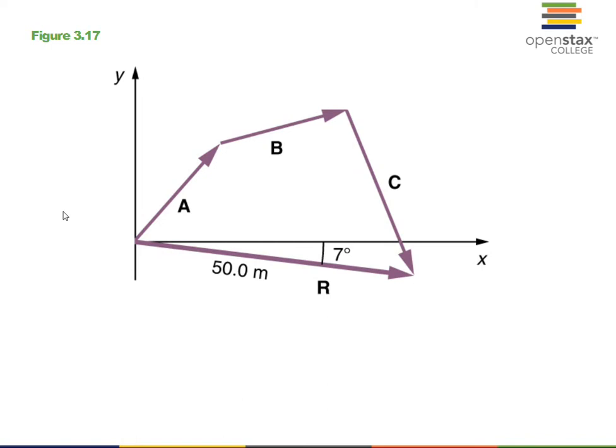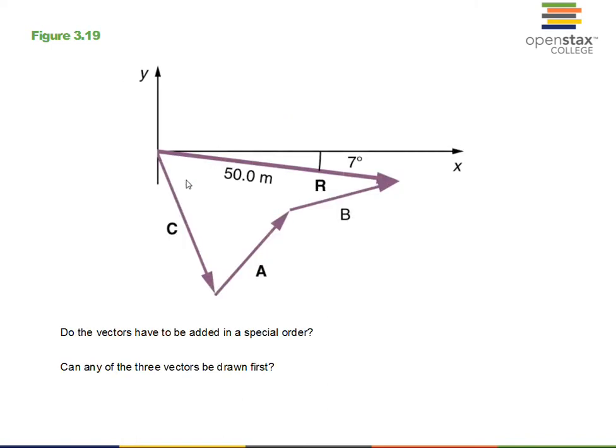Do we have the same result here? Instead of putting vector A first in the addition, the book has chosen to put vector C first. The vector C, its length here, 68 degrees below the x-axis. And then draw vector A and then draw vector B. And you should notice that we get the same result. It does not matter which vector comes first when you do your drawing. But it doesn't matter what the order is.